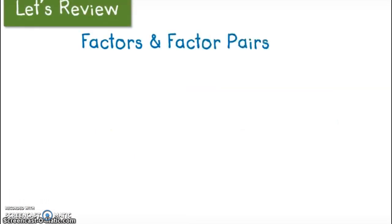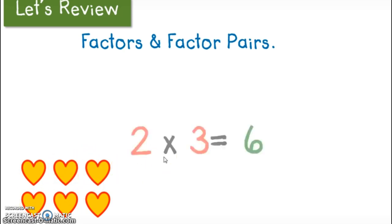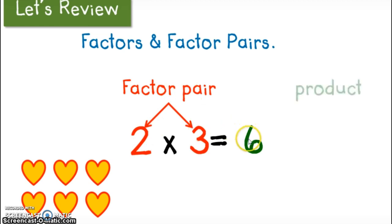So let's do a quick review. Factors and factor pairs. So when we say factors, we really mean, well, factors come in pairs. So we give a quick example with some hearts. So we've got six hearts. And we're going to think of some facts for six. So two and three, two is a factor, and three is a factor of six. So together, we call them a factor pair. And then six is the product. So again, two and three are the factor pair. So two and three are factors of six. Six is the product.